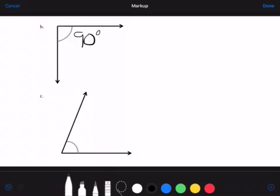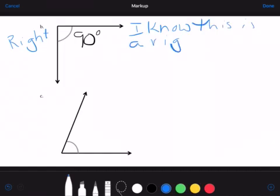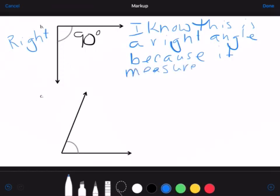Next, I need to classify it as either right, acute, or obtuse. And a 90 degree angle is a right angle, so I'm going to write right angle out there. Then I need a sentence explaining. So I write, I know this is a right angle, because, and then think through it. Why do you know it's a right angle? Because it measures exactly 90 degrees.